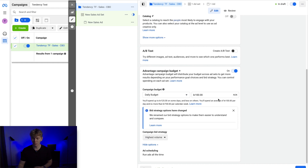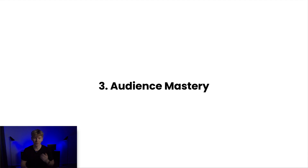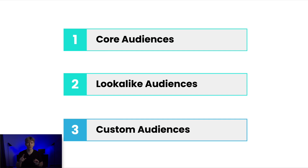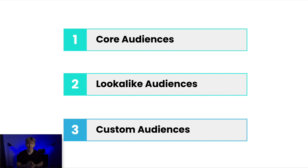Now we're at the ad set level — number three, audience mastery. There are three types of audiences: Core Audiences, Lookalike Audiences, and Custom Audiences. Core audiences are based on data Facebook already has, available to all advertisers. Lookalike and Custom Audiences are based on data specific to your business. As a beginner, focus on Core Audiences since you don't have much data yet. Over time, as you run core audiences and gather data, you can build lookalike and custom audiences.